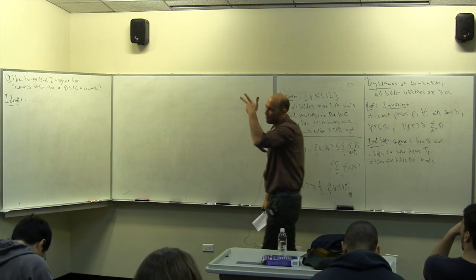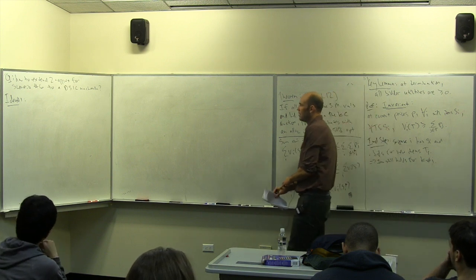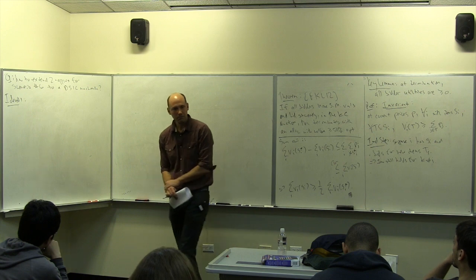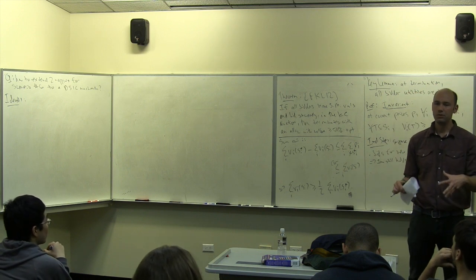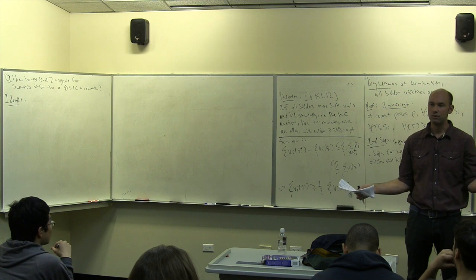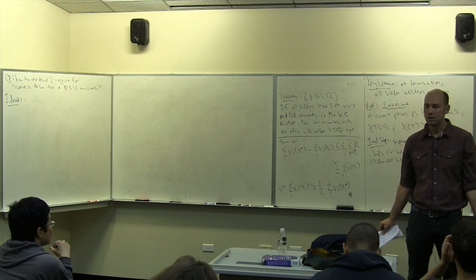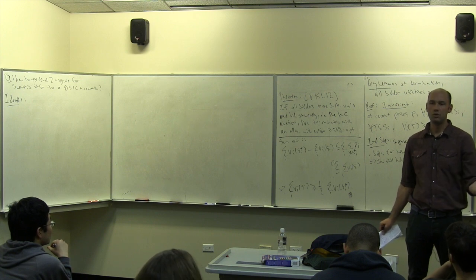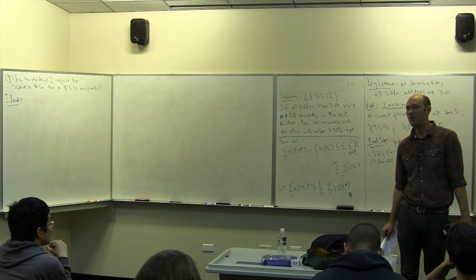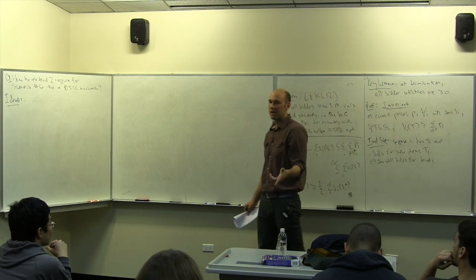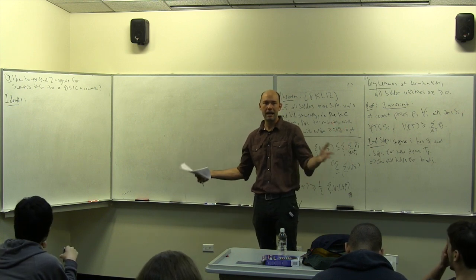Let me make some high-level comments about the challenges here. For those of you who took 364A last quarter, we've been here before. The case study was knapsack. Myerson's Lemma told us exactly which allocation rules could be used in DSIC mechanisms — exactly the monotone allocation rules. Knapsack is NP-hard, but you can get a 1-minus-epsilon approximation in polynomial time. When we inspected the corresponding allocation rule, it wasn't monotone, but you tweaked it in a homework problem and showed it could be redesigned to be monotone and still give 1-minus-epsilon — a total happy ending.